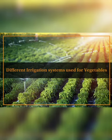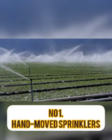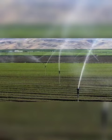Number one is hand-moved sprinklers. This is the least expensive overhead irrigation system. The labor cost to move the equipment through the field is relatively high. Water distribution is very uniform, although tall crops are not easily irrigated. Sprinkler irrigation may also be used for frost protection.